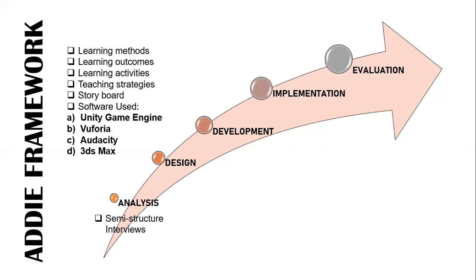Next, for the design phase. The design is obtained from findings in the first analysis phase and identifies the objectives that need to be achieved. The elements considered in this phase include teaching and learning methods, learning theory, learning activities, and teaching strategies. We also created a storyboard in order to design the best augmented reality application. The software used for these AR apps are Unity game engine, Vuforia, Audacity, and 3ds Max.